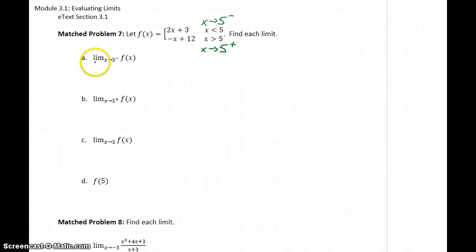When we look at part a, the limit as x approaches 5 from the left-hand side of our function f(x), we have to look at the half of this function where x is approaching 5 from the left. This means we're considering the limit of the first part of the definition, 2x plus 3. Since we have a polynomial function, we can use direct substitution: 2 times 5 plus 3, or 10 plus 3, which is 13.